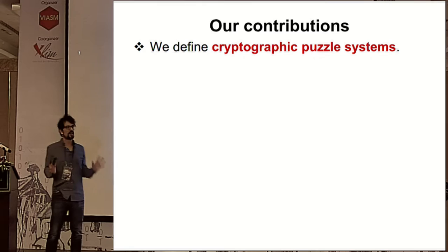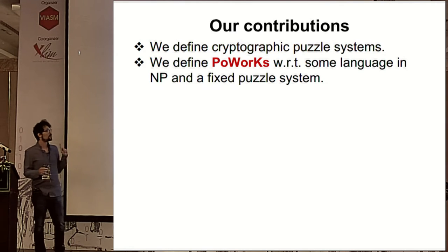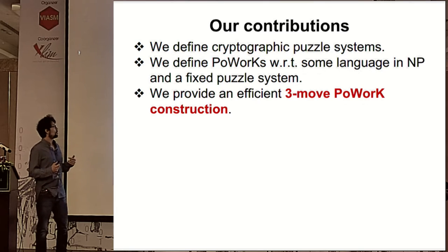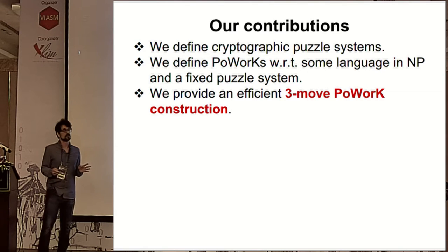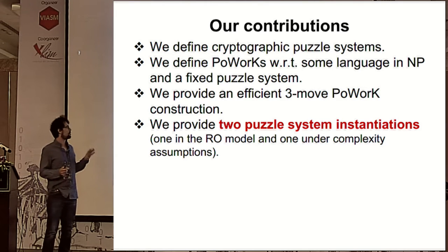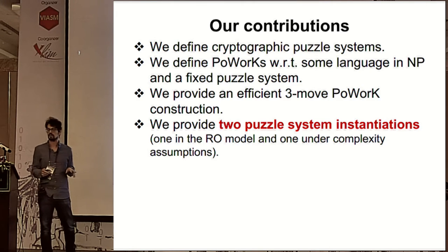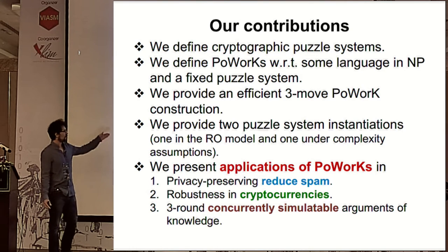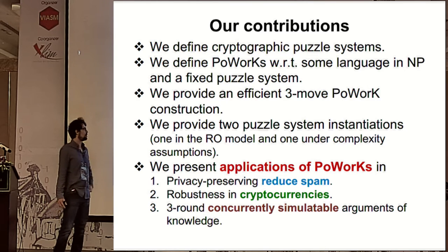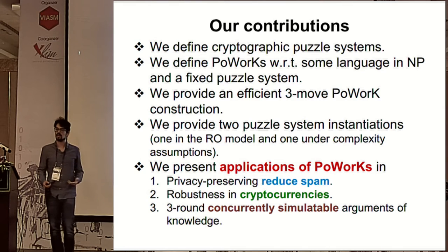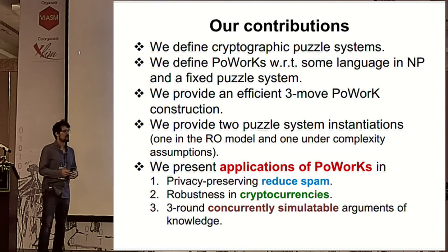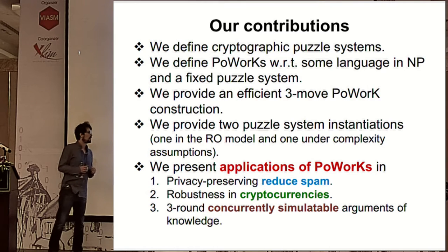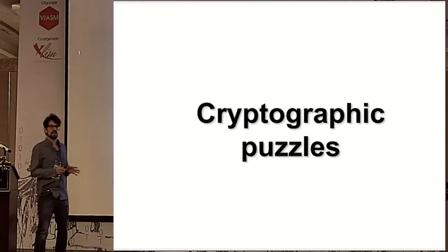Our contributions are: first, we formally define what a cryptographic puzzle system is, then use this notion to define PoWoK with respect to some language in NP and a fixed puzzle system. We provide an efficient three-move PoWoK construction and instantiate our puzzle systems in two ways — one using the random oracle model and one relying on complexity assumptions. We also have two real-world applications: privacy-preserving anti-spam and a hybrid cryptocurrency system with enhanced liveness, plus a theoretical application yielding a three-round concurrent simulatable argument of knowledge.